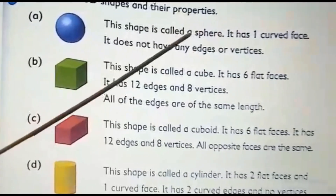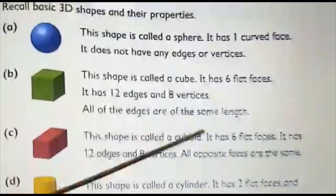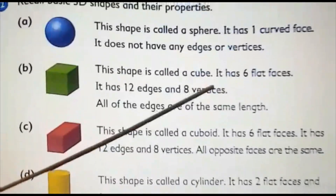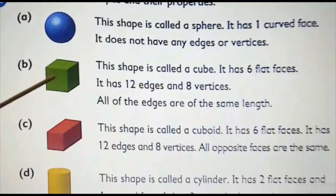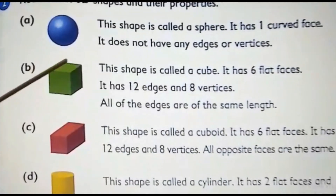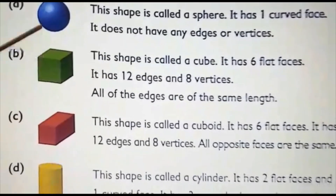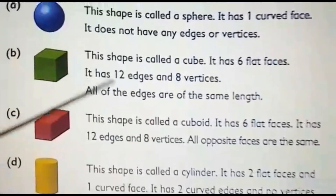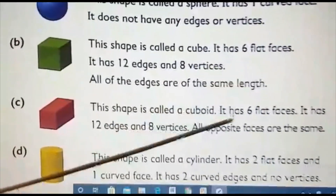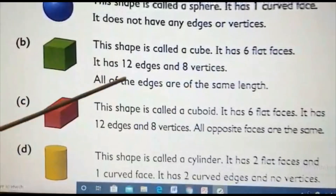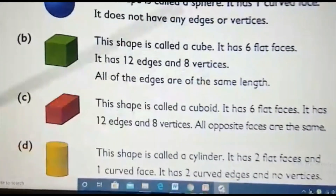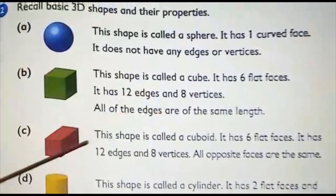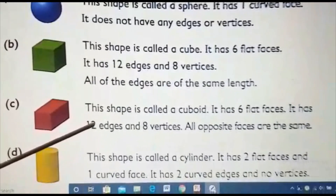Study the spelling of sphere as you will need it in higher classes. The 3D version of a square is called a cube. It has six flat faces — all of the same length, which is the speciality of a cube. It has 12 edges and 8 vertices.